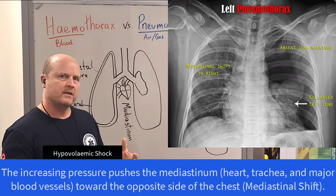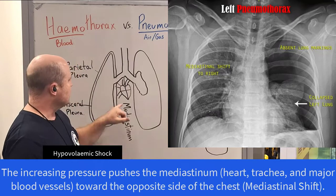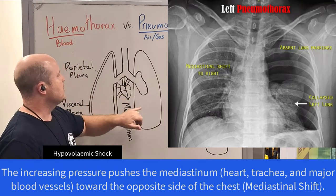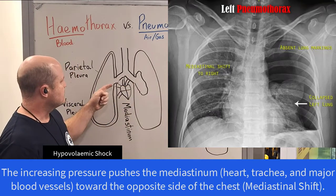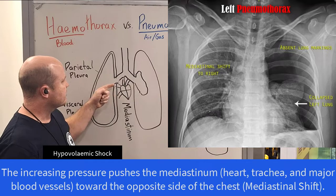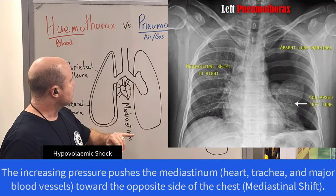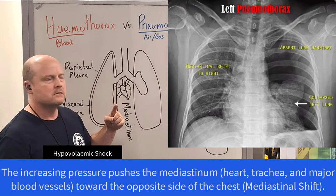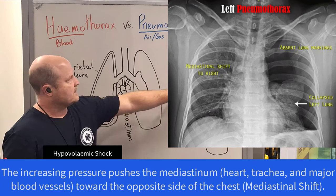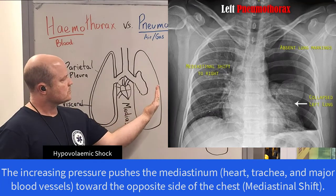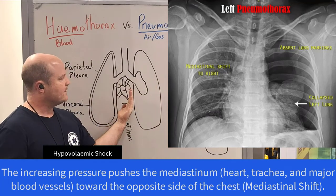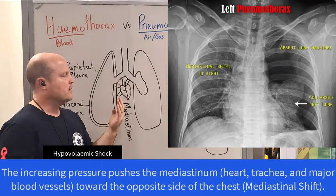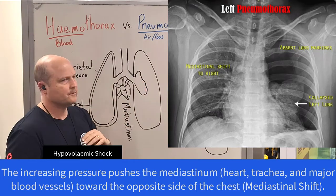In our mediastinum, we have our heart, we have our great vessels like our superior and inferior vena cava, our aorta, and our pulmonary arteries. A tension pneumothorax could cause squashing and mediastinal shift, where we push over this way.